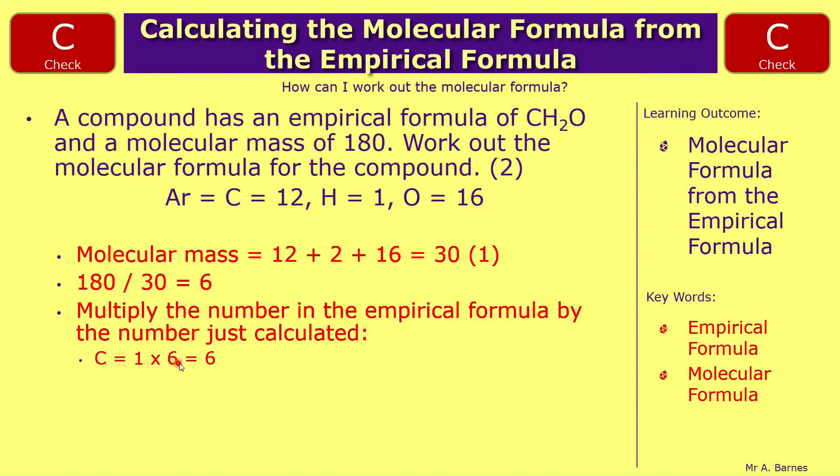So carbon, we had 1, times it by 6, gives me 6. Hydrogen, I had 2, times it by 6 is 12. Oxygen, 1 times 6 is 6. Which gives me my answer of C6H12O6. So one mark for that, and one mark for the correct answer. If you'd written C6H12O6, you would have got all the two marks without any working.